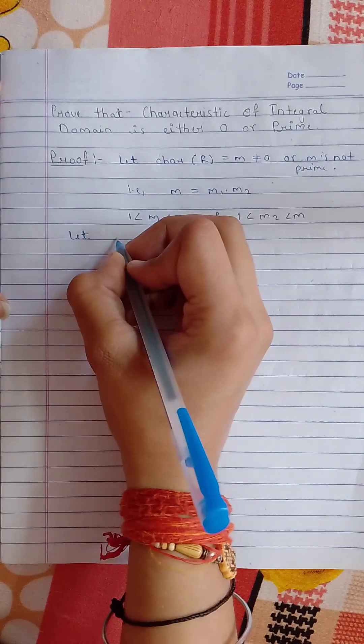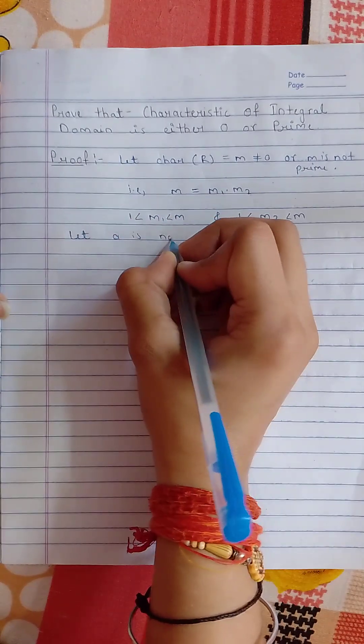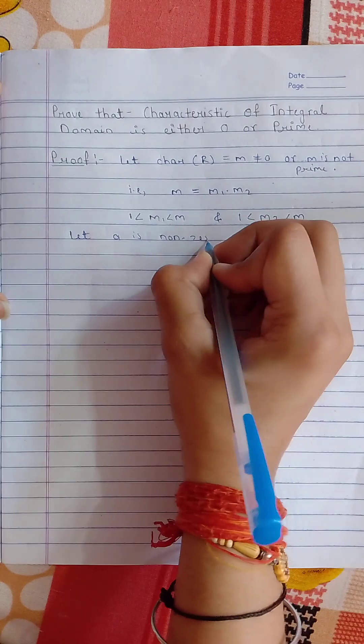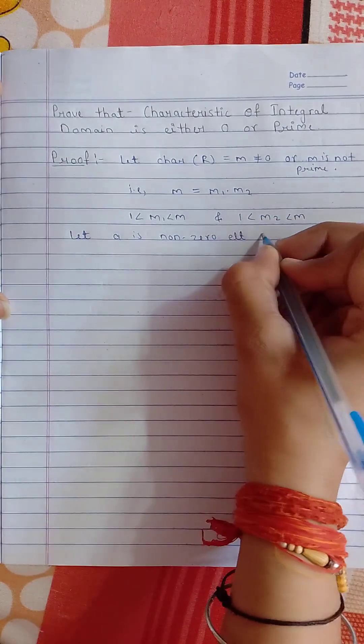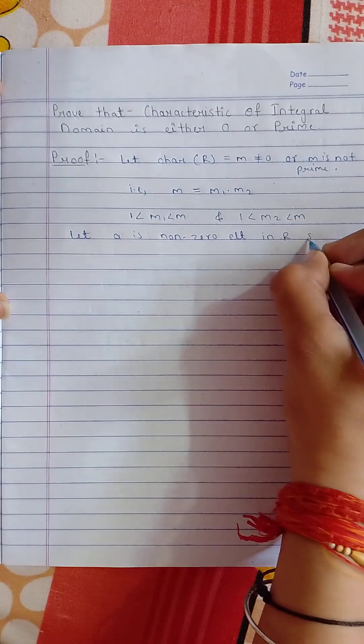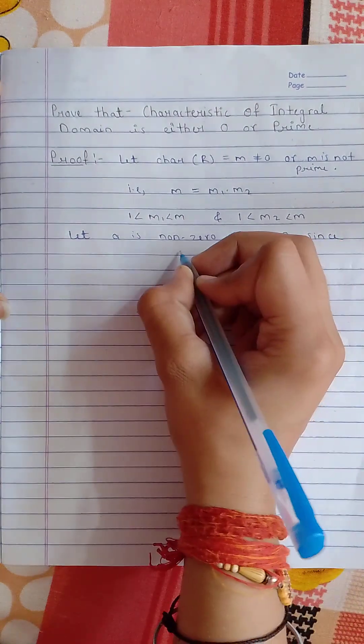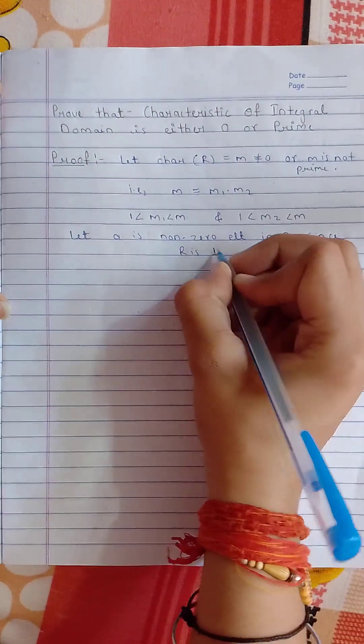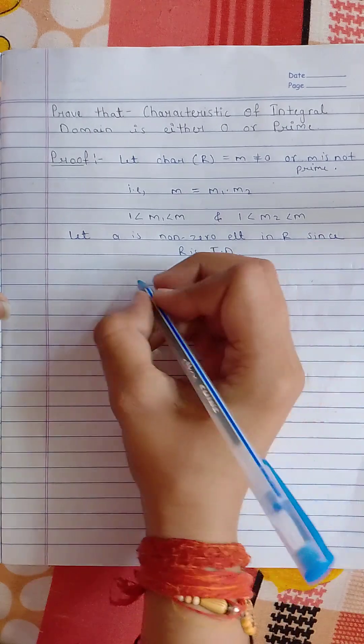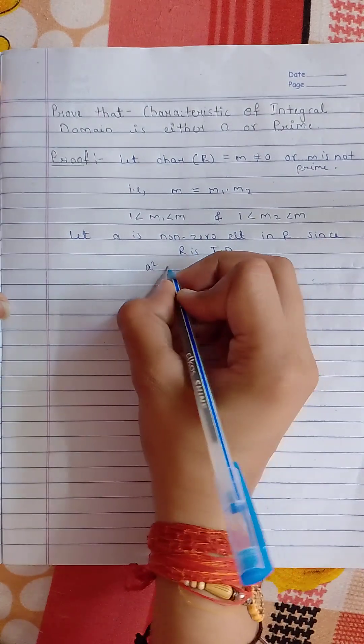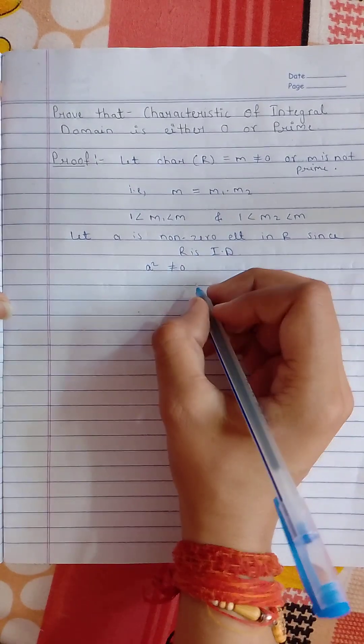Then let a be a non-zero element in R. We know that R is an integral domain, so a squared is not equal to 0.